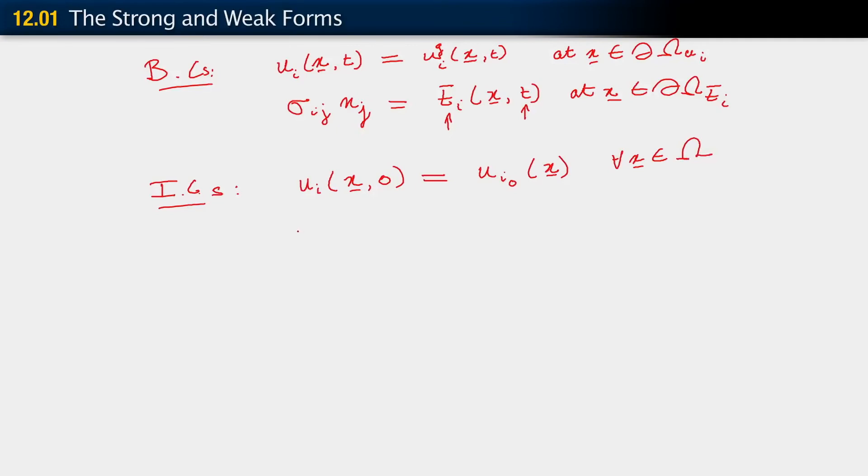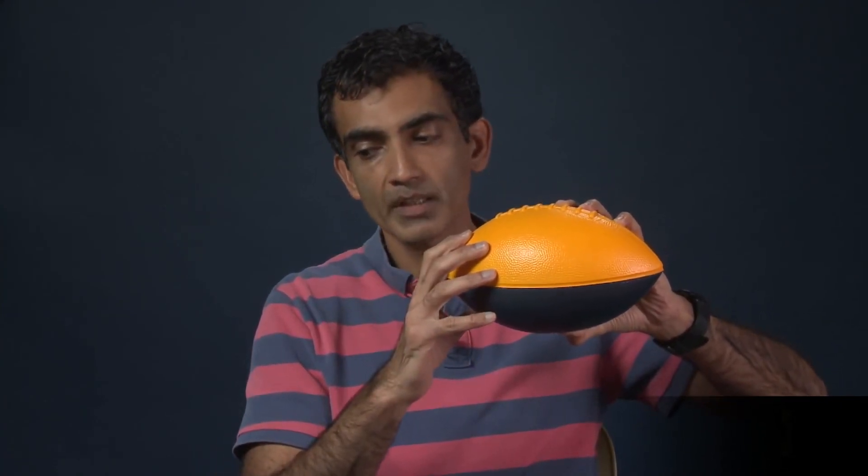It is second order, so we need two initial conditions. The next initial condition is for u_i dot x comma 0 equals the specified distribution of velocities. What this means is that at the initial condition we are saying that not only do we start out knowing where every point on this body is, that is the first of those initial conditions. What we are saying, we must also know what the initial velocities are. That's the second initial condition. This is our strong form.